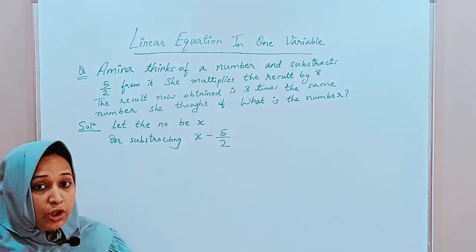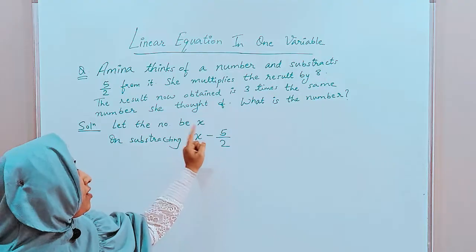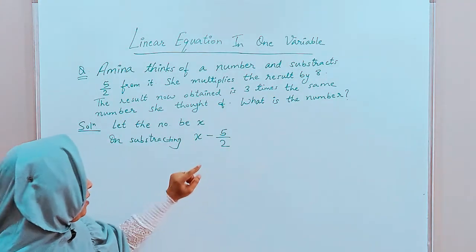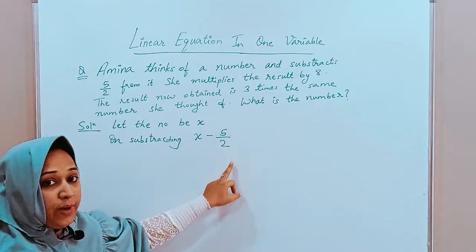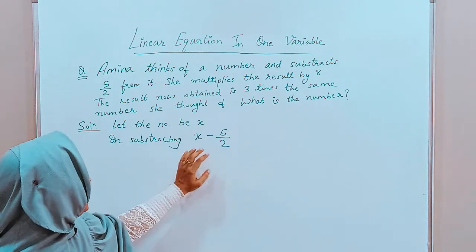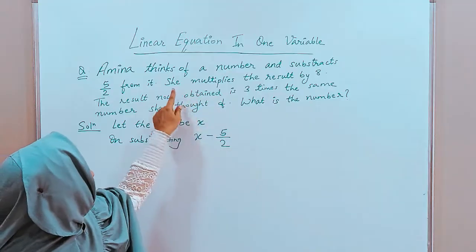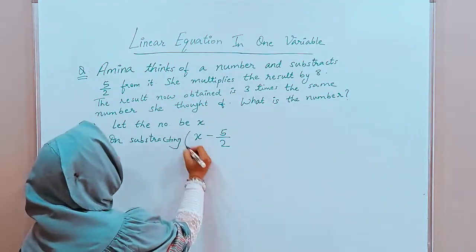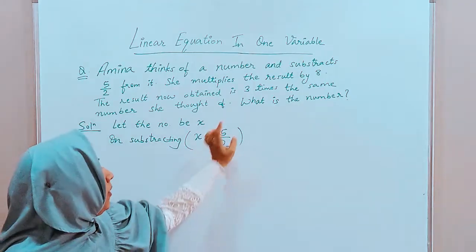If the question is saying the other way, that x was subtracted from 5 by 2, then it will become 5 by 2 minus x. This is very important. Then, she multiplies the result. Which result? This is the result complete by 8.